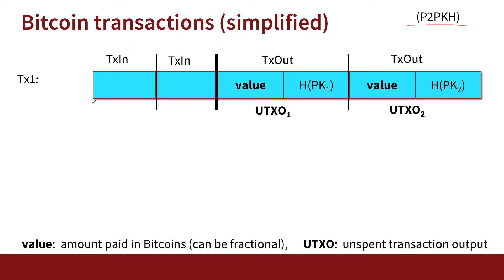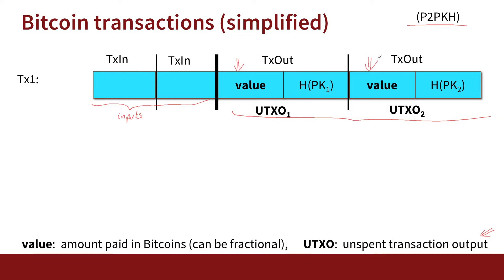So what is a transaction? A transaction has a number of inputs — we'll see the format of inputs in just a minute — and then it has a number of outputs. In this case we have two transaction outputs. The transaction specifies how many Bitcoins are going to be transferred to this address, and how many Bitcoins are going to be transferred to that address.